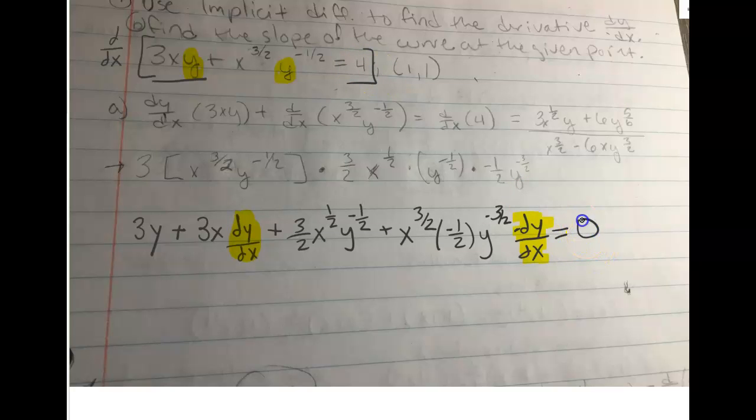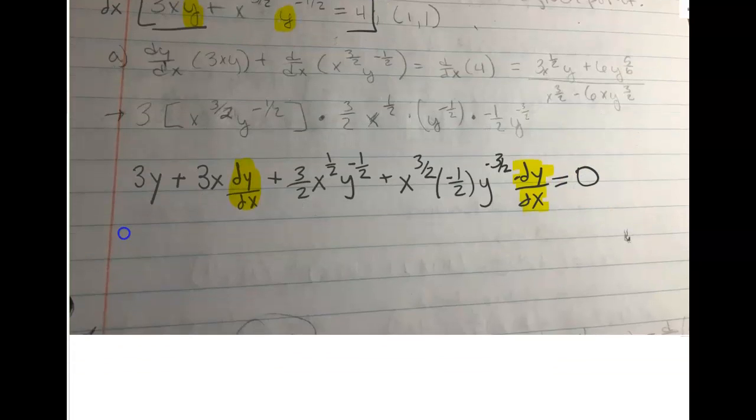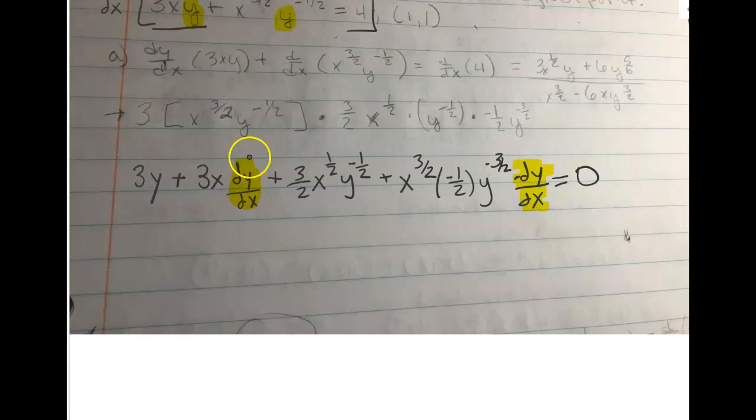Equals the derivative of 4, which is 0. So at this point, the rest is algebra. I'm going to group my terms with dy over dx in them on one side of the equation, put everything else on the other.